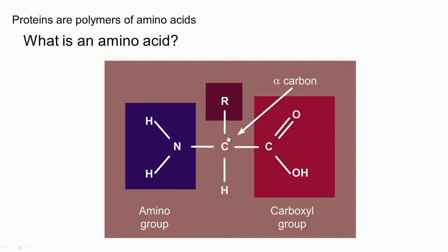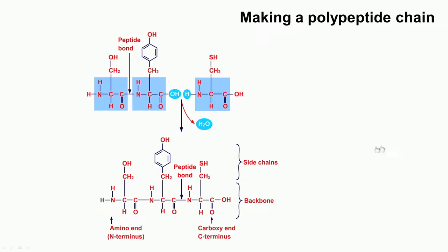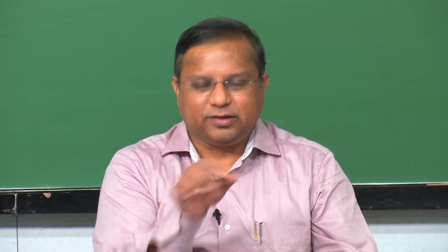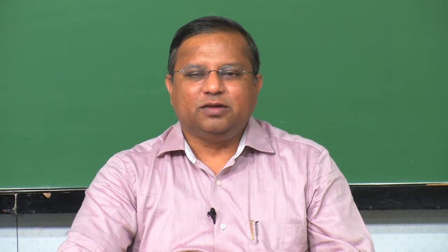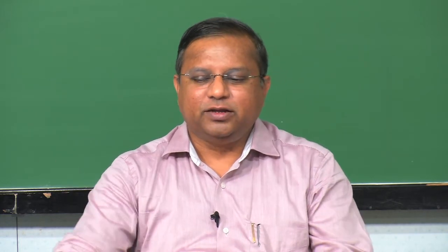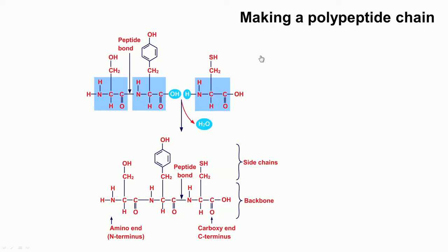When you have a polymer of these amino acids, you get a protein. A polypeptide is a shorter form of a protein. Polypeptide formation is illustrated here to show how a protein gets made. This is one amino acid: C, NH2, COOH, H, and the R group happens to be CH2SH. This amino acid is already combined to another amino acid through what is called a peptide bond.